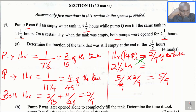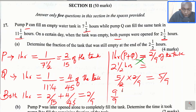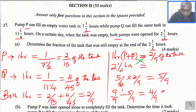That is the fraction of the tank filled by both pumps P and Q in 2 and a half hours. Now, what is the remaining fraction of the tank? We assume that when the tank is full, the fraction is 9 over 9, or 1. Subtract the already-filled fraction, which is 5 divided by 9, and this gives 4 over 9. This is the fraction that is empty.